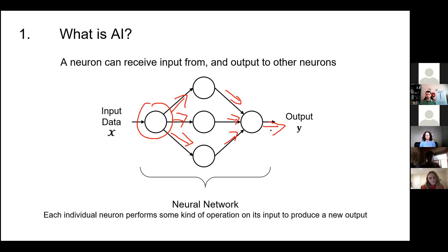When you look at a figure like this, you might ask: I kind of get it — you have a series of circles that accept inputs, do some math, and produce an output. How can this most basic structure do anything of use? How can it perform any kind of useful task? Well, that's a bit complicated. Let's use an example.